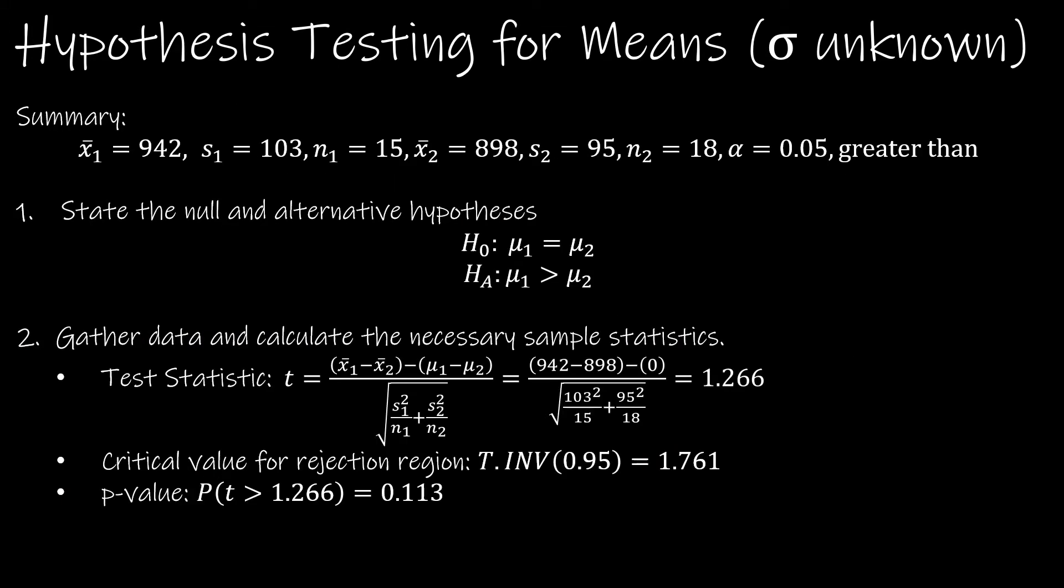The null and alternative hypotheses. Again, mu one is equal to mu two or mu one is greater than mu two. And again, if it makes more sense to you, please feel free to say mu one minus mu two is equal to zero and mu one minus mu two is greater than zero.